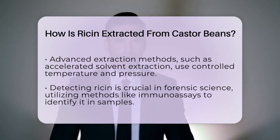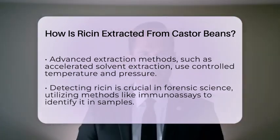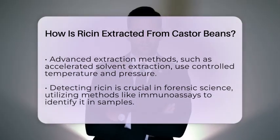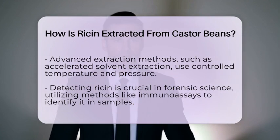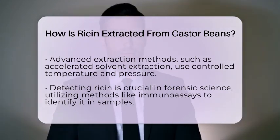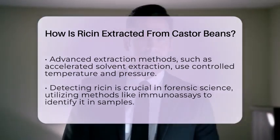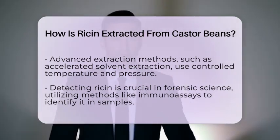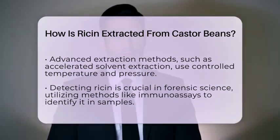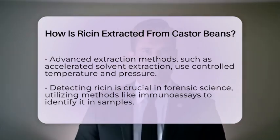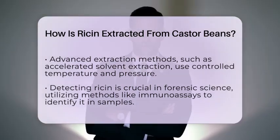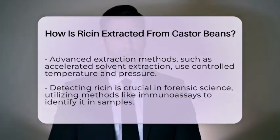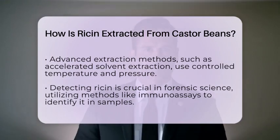In forensic science, detecting ricin is essential. Various methods, such as immunoassay, can be used to identify ricin in samples. These tests measure the biological activity of ricin in cell cultures, providing vital information in criminal investigations.